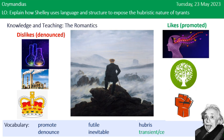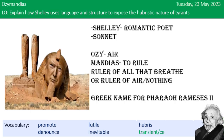Now onto Ozymandias. It was first published in 1818. It tells the story of a traveller who comes across the ruins of a statue of ancient Egyptian pharaoh Rameses II, also known as Ozymandias. The poem is a sonnet, a 14-line poem that follows a specific rhyme scheme. These are usually love poems, so it could have been used to show Ozymandias' love of himself or his love for power.